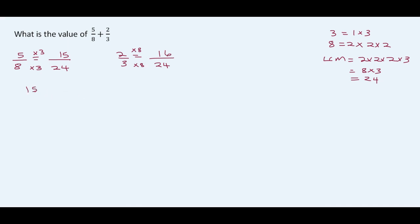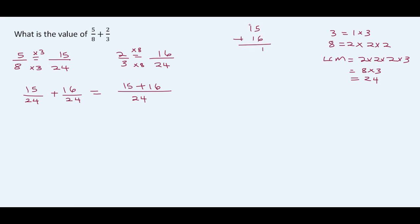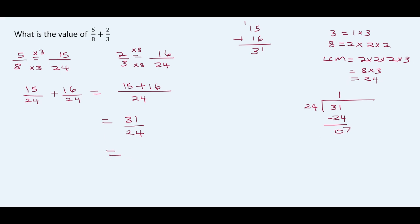So now we have 15 over 24 plus 16 over 24. We keep our denominator and add the numerators: 15 plus 16. 5 plus 6 is 11 — write 1, carry 1. 1 plus 1 plus 1 is 3. So this gives us 31 over 24. How many groups of 24 in 31? We can only get 1. 1 times 24 is 24, we subtract, and we're left with 7. So this gives us 1 and 7 over 24.